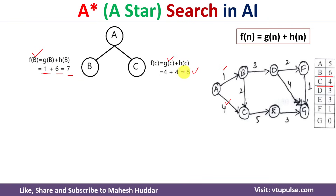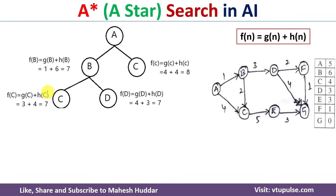Between B (cost 7) and C (cost 8), 7 is the minimum, so we select B for further expansion. We check whether B is a goal node — it is not. From B there are two reachable nodes: D and C. We calculate their costs. For this C (reached from B): f(C) = g(C) + h(C). The parent of C is B, so g(C) = cost(A→B) + cost(B→C) = 1 + 2 = 3, and h(C) = 4, giving f(C) = 7.